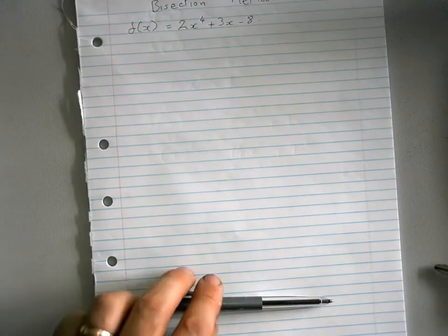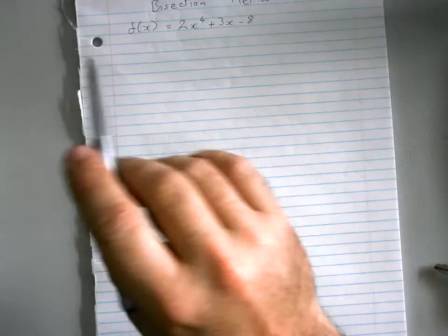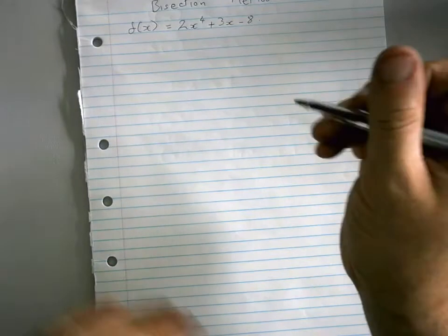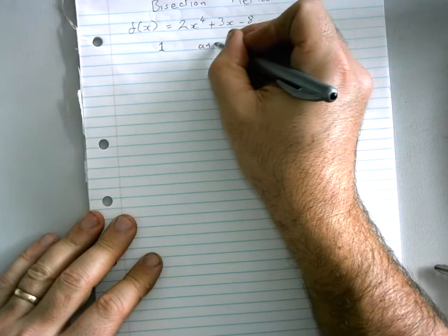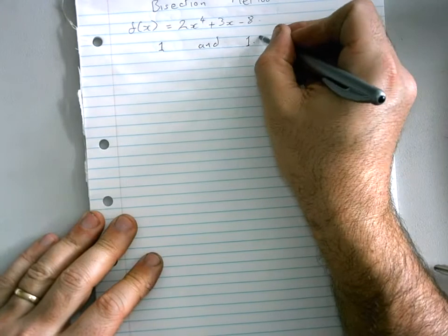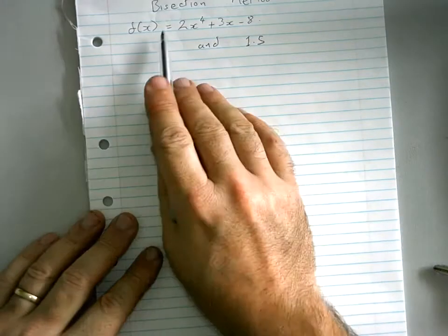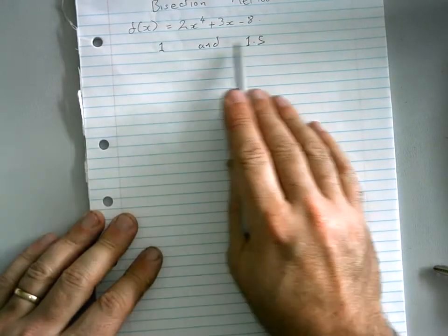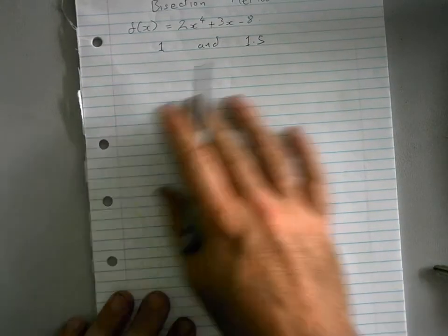We're going to use the bisection method to try and find a root for this particular piece of mathematics between 1 and 1.5. So this has a root between 1 and 1.5, and this is the way I'm going to do it.